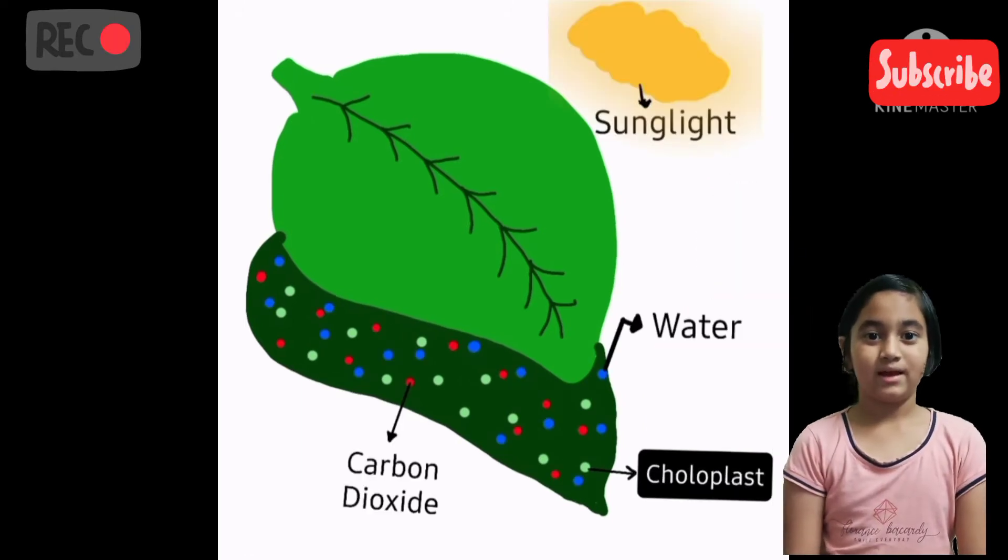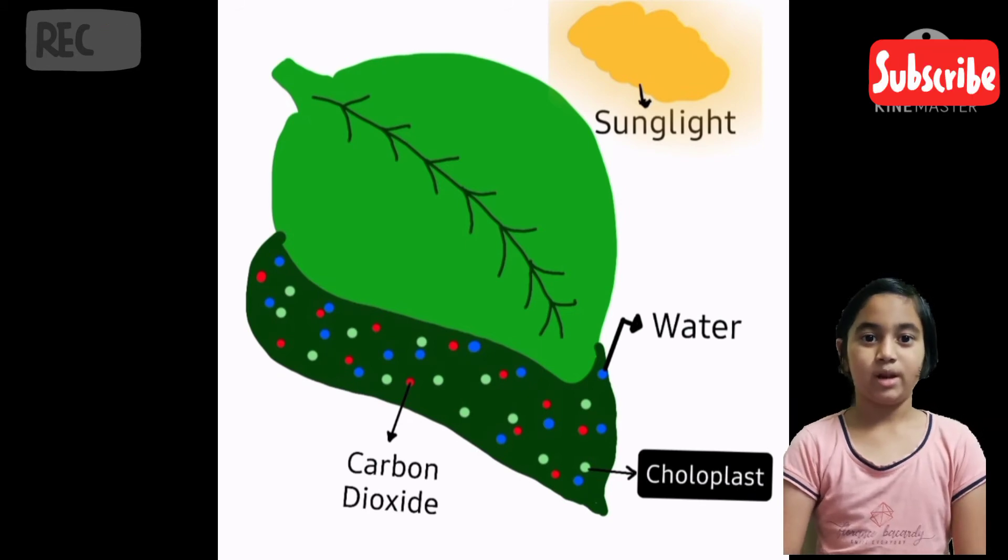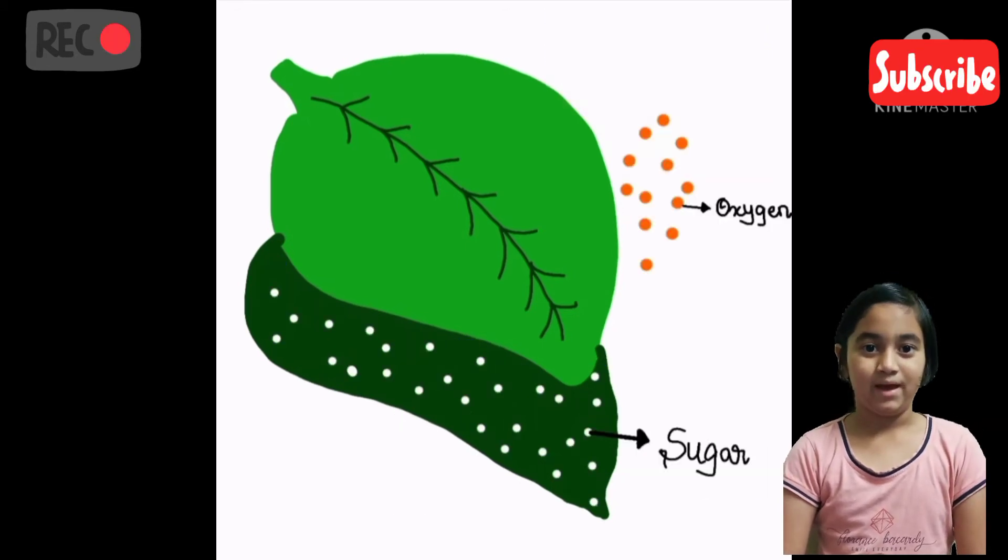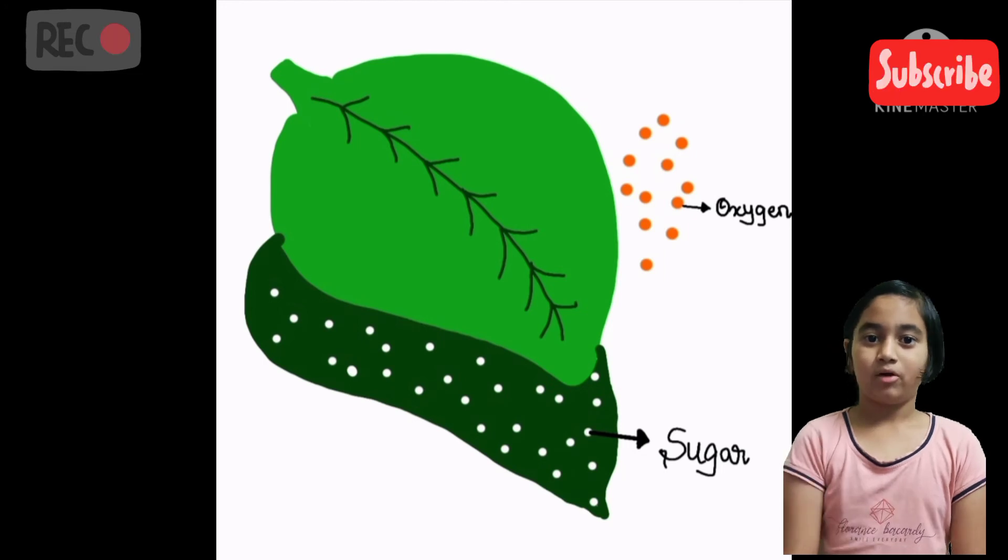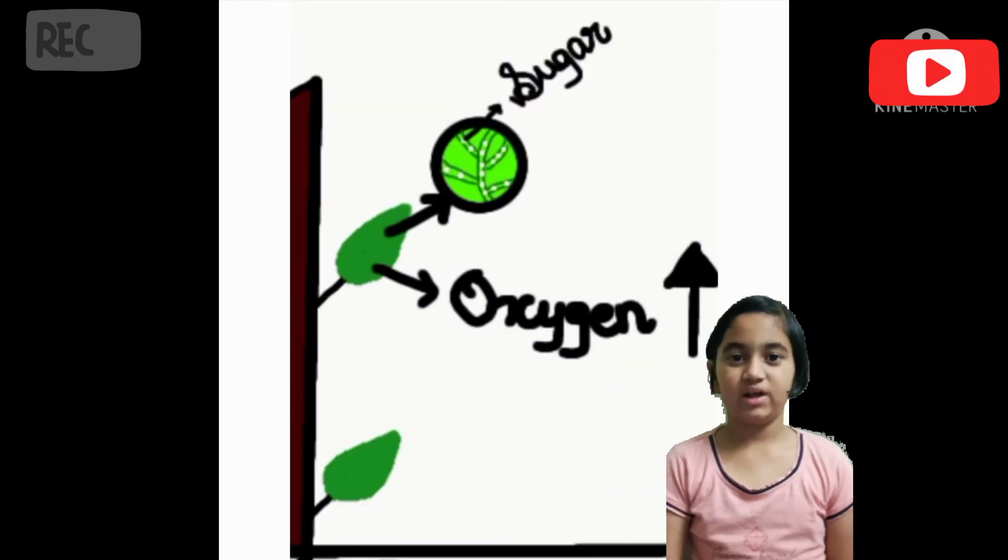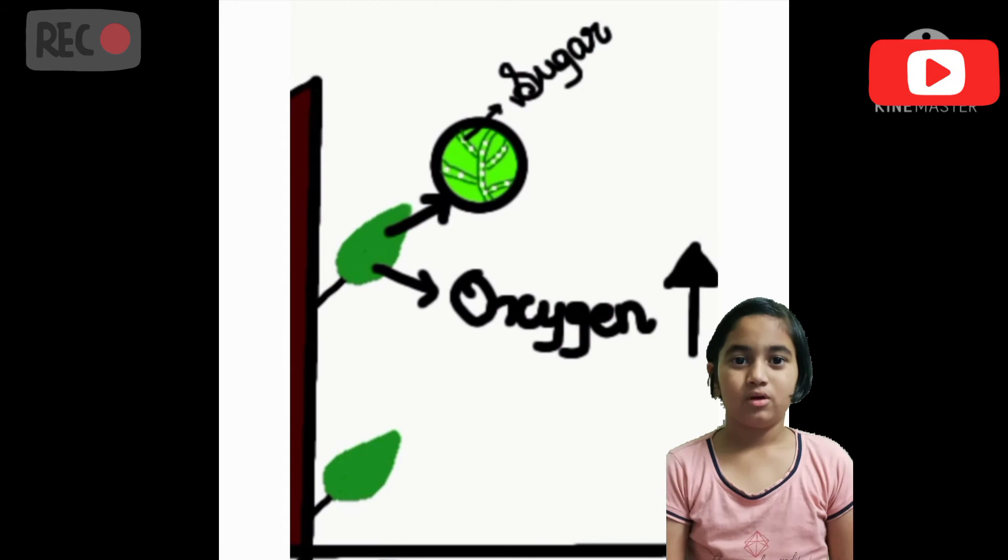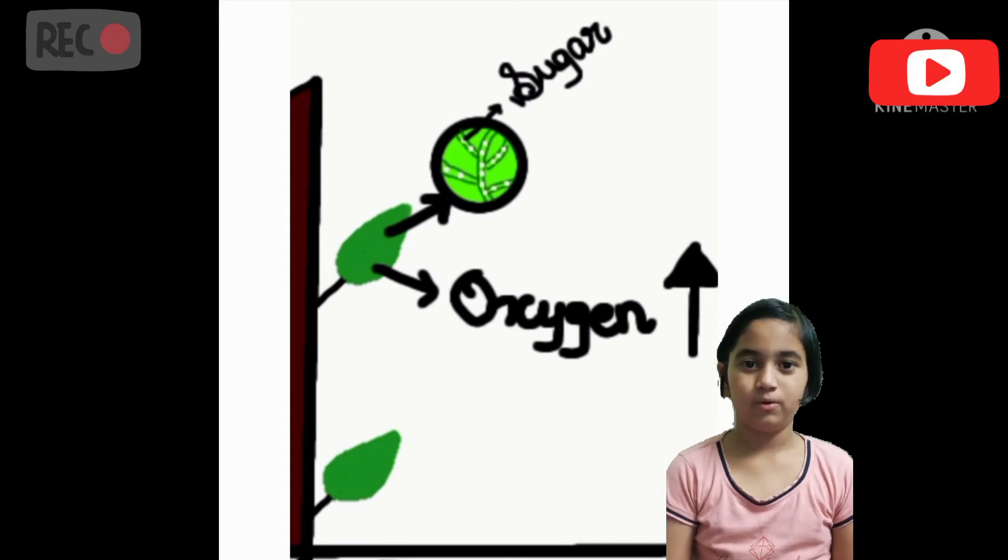Chloroplasts take in sunlight, water and carbon dioxide and make sugar and oxygen. Afterwards, plants use sugar for food and oxygen release in atmosphere.